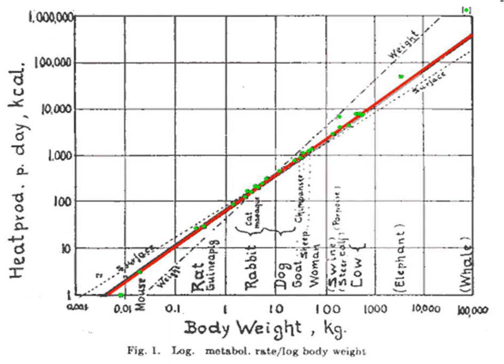Thus, if B denotes the basal metabolic rate, Q the total fluid flow, and N the number of minimal tubules, then B ~ Q ~ N.